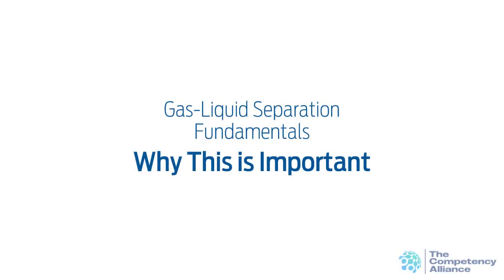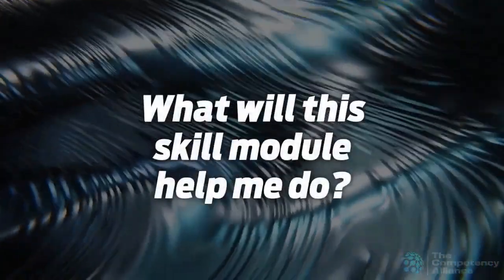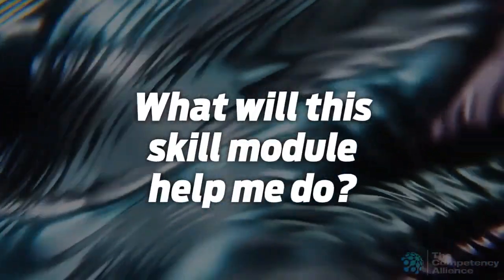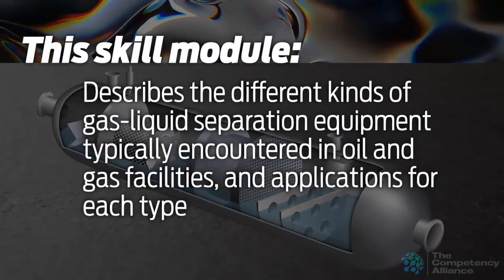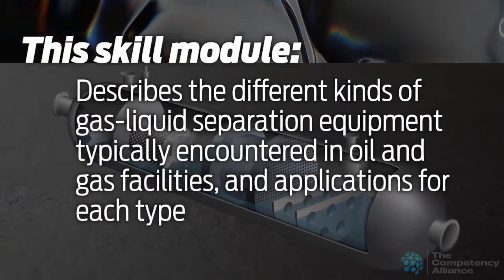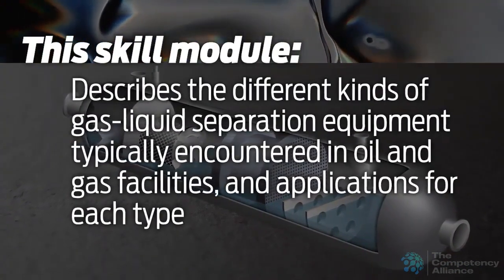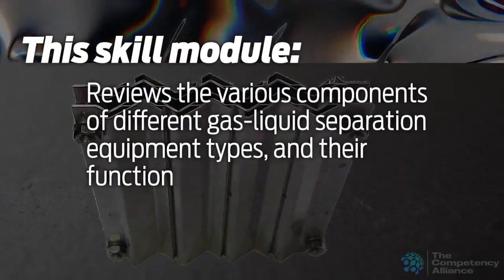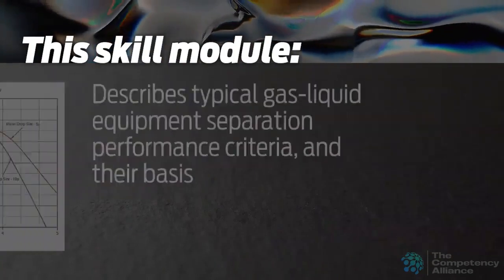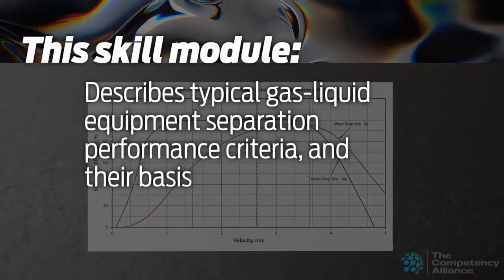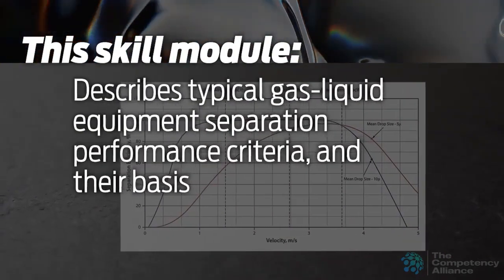This skill module discusses gas-liquid separation at the fundamental level. This section touches on why this topic is important. This module describes the different kinds of gas-liquid separation equipment typically encountered in oil and gas facilities, applications for each type, and reviews the various components of different gas-liquid separation equipment types and their function. It also describes typical gas-liquid equipment separation performance criteria and their basis.